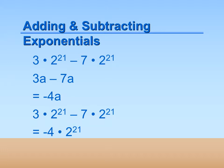For example: 3 times 2 to the 21st power minus 7 times 2 to the 21st power. Just think of 2 to the 21st power as a variable — let's call it a. Then the expression becomes 3a minus 7a, which is negative 4a. Then replace a with 2 to the 21st power, and you get negative 4 times 2 to the 21st power. Those exponential terms are now combined.